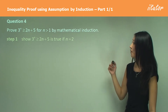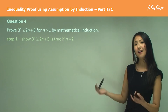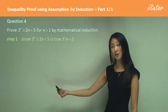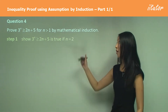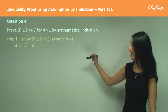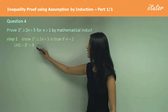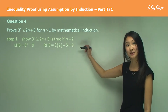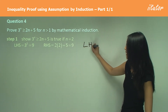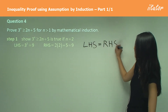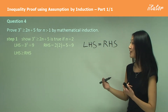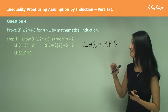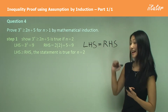In Step 1, we want to show it's true for n equals 2. We know it's n equals 2 because n has to be greater than 1 and must also be an integer, so the next integer along is 2. Substituting 2 into the left hand side: 3 squared equals 9. For the right hand side: 2 times 2 is 4, plus 5 equals 9. So the left hand side equals the right hand side, and since we're proving greater than or equal to, the statement is true for n equals 2.